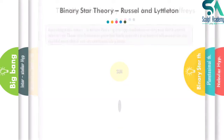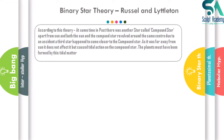The next theory is the Binary Star Theory by Russell and Litton. In this theory, at some point in the past there was another star called the compound star apart from the sun. Both the sun and compound star revolved around the same center. Due to an accident, a third star appeared and came closer to the compound star. Since it was far from the sun it did not affect it, but caused tidal action on the compound star, from which the planets formed.